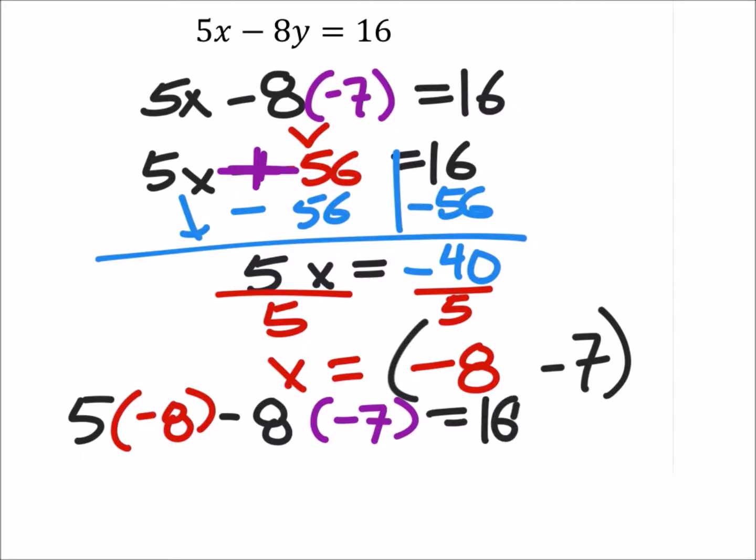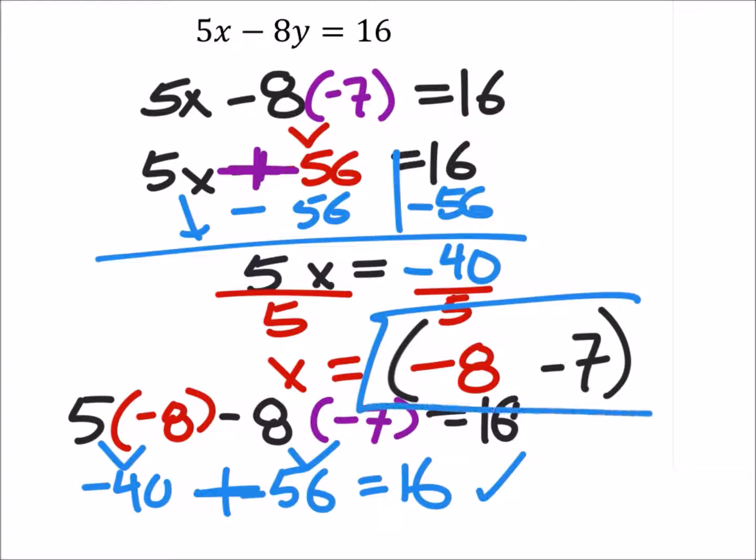So that would give us 5 times negative 8 is negative 40, minus 8 times negative 7, again negative 56, should equal 16. And since that creates a plus in between, that one checks off and we know the answer is correct.